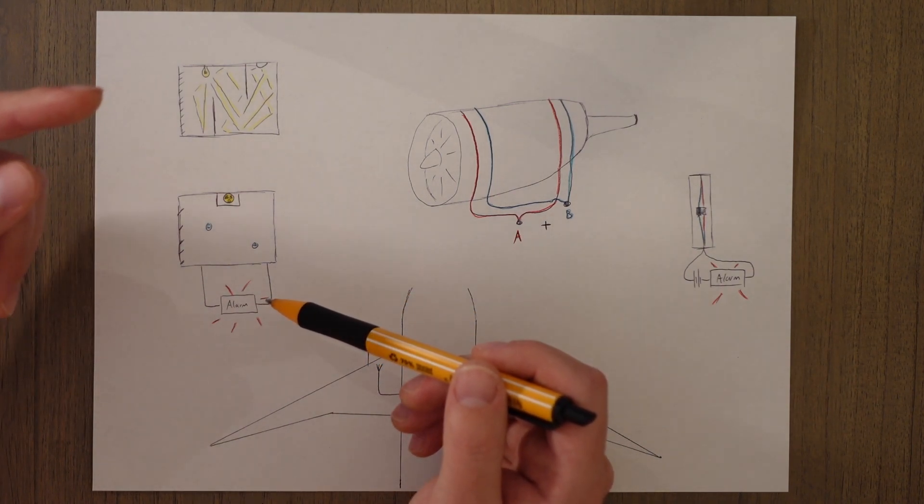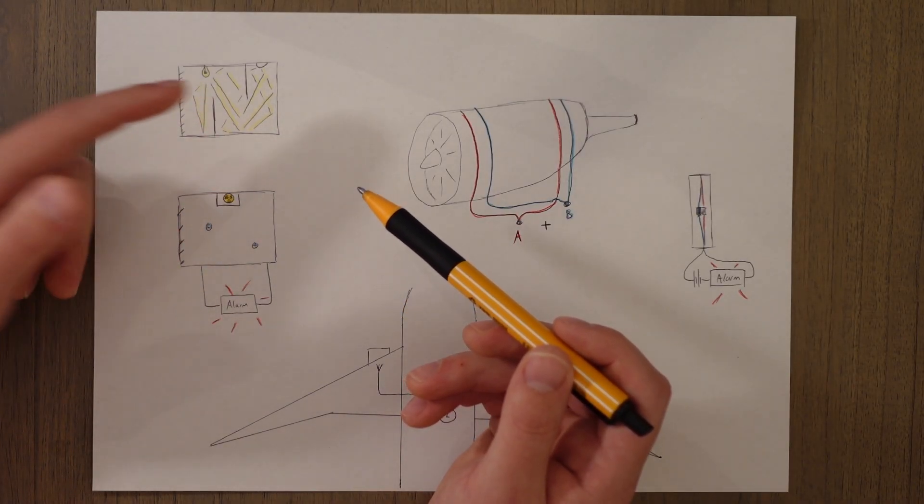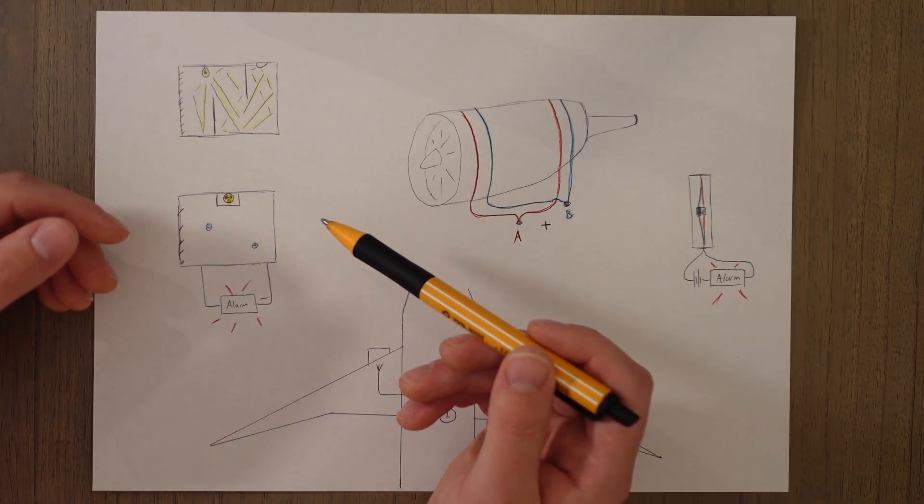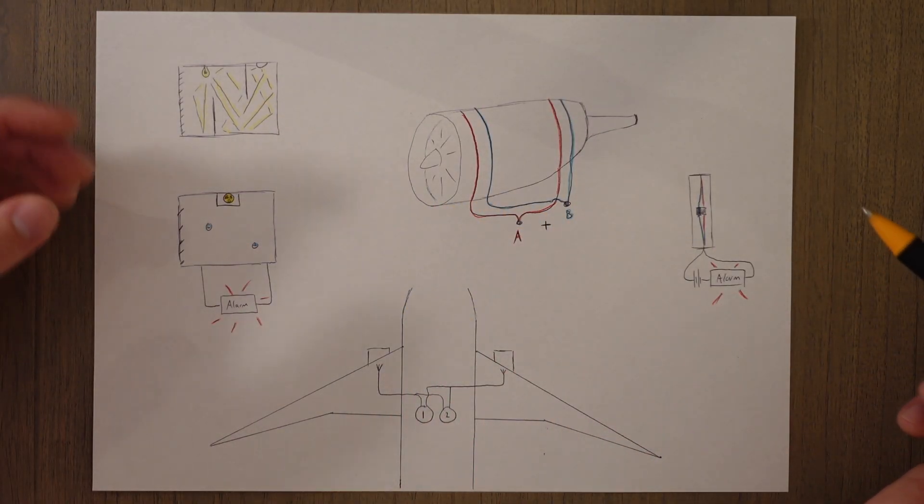I think of them as almost being opposite. This one you're sort of breaking a circuit whereas this one you're making a light circuit. I don't know why that's in my head but that's the way that I've remembered it. So that's smoke detection.